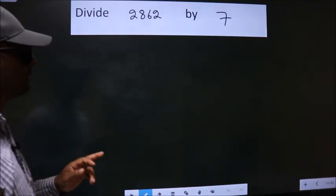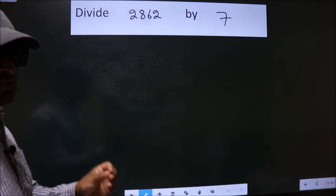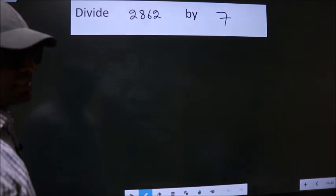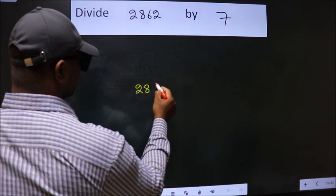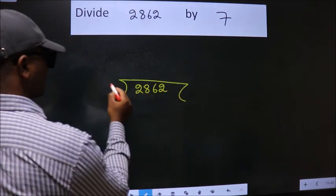Divide 2862 by 7. To do this division, we should frame it in this way: 2862 here, and 7 here.